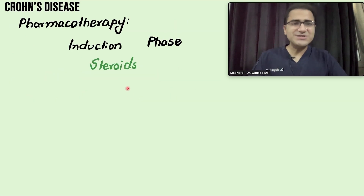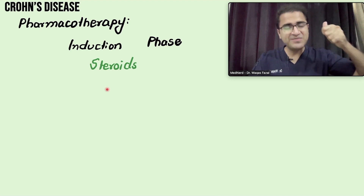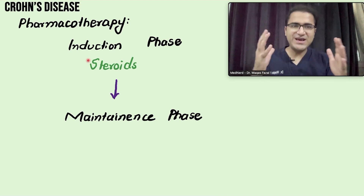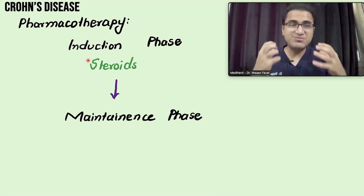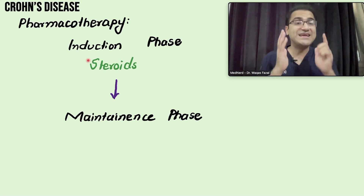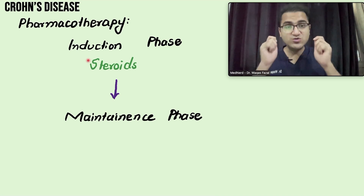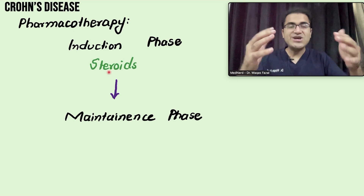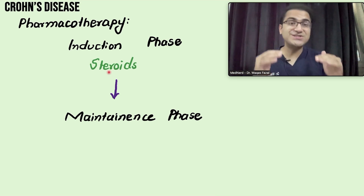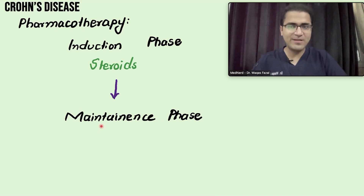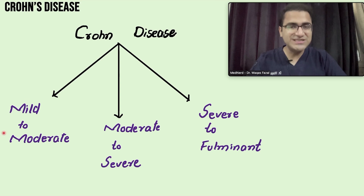In the treatment of Crohn's disease there are two aspects: induction therapy and maintenance therapy. In induction therapy, when the patient comes to you, the patient will be in a flare — severe exacerbation with abdominal pain, diarrhea, and passing lots of stools. In that acute flare you perform induction therapy using steroids. When the patient returns to normal baseline, in selected patients you go for maintenance therapy.